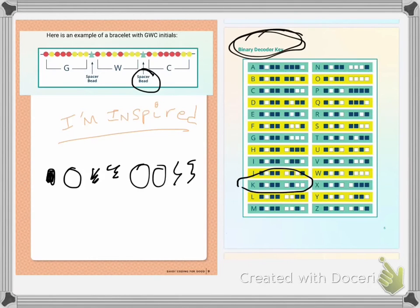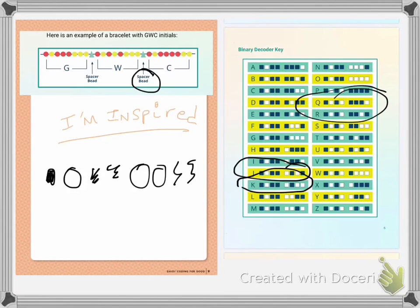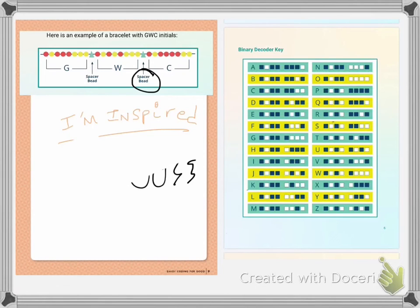Then I would go to my J, which is my next initial, and do my beads for that, then put in a spacer. Then I would go to Q for my last name and put in my spacer. If you end up building a binary code bracelet, I would love to see it — please feel free to post it on our Troop Facebook page, which is Troop 5036.